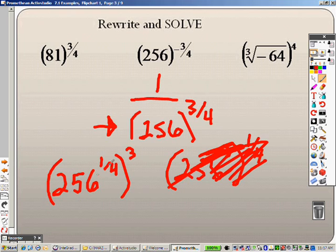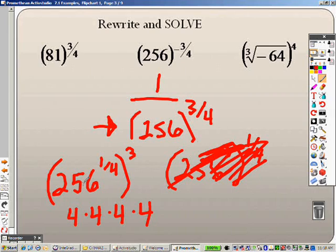Whereas over here, can you think of four numbers that will give you 256? I can. 4 times 4 times 4 times 4, right? That will multiply to give you 256. So really, what I have is a 4 to the 3rd power. And 4 times 4 times 4 is 64.